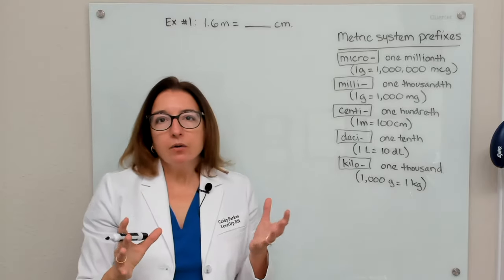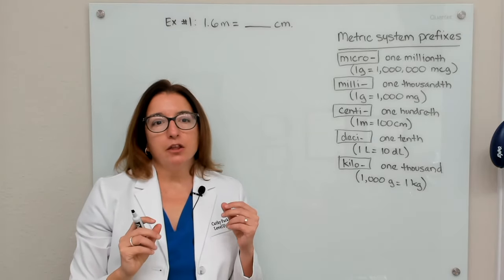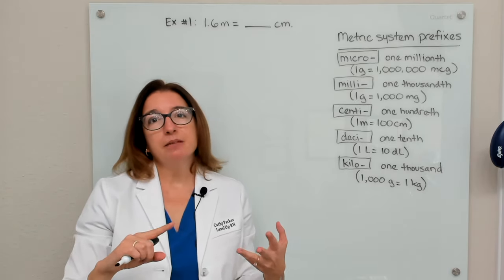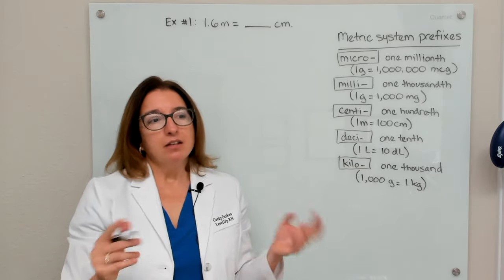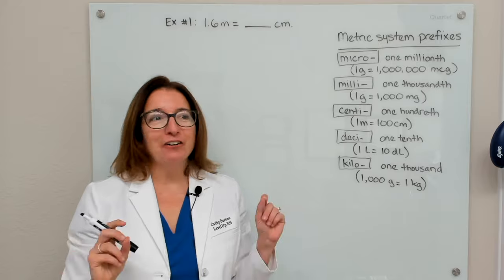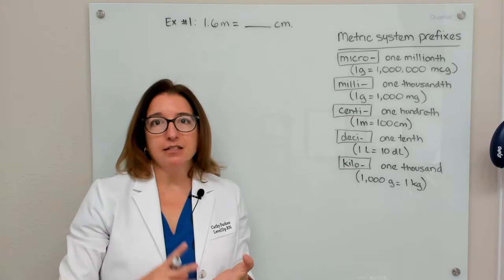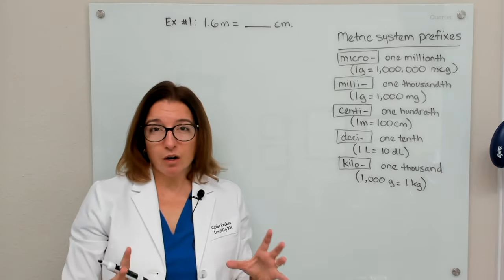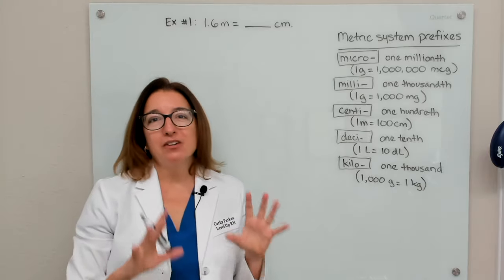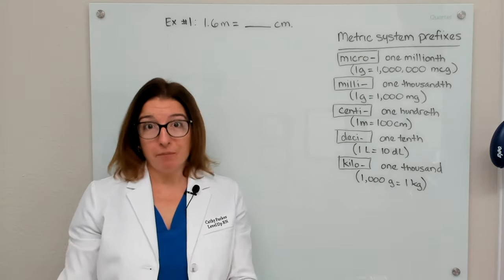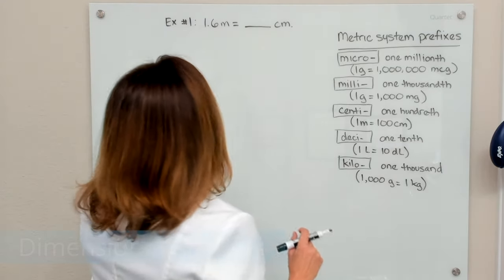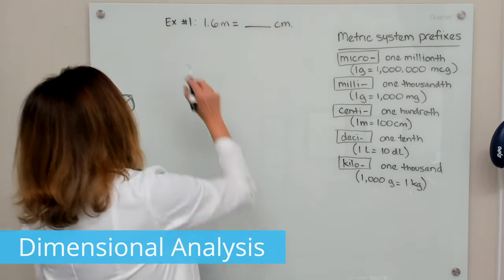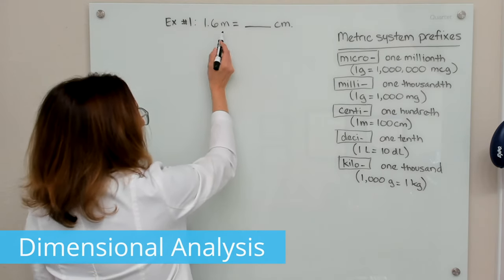We are going to convert within the metric system using three different methods: dimensional analysis, ratio and proportion, and simply moving the decimal point. It might seem like a little overkill to solve these problems with dimensional analysis and ratio and proportion, but it's good to get used to these methods when the problems are easy, so you know how to use them when we get to more complicated problems. Let's first solve this example problem using dimensional analysis — we want to convert 1.6 meters into centimeters.